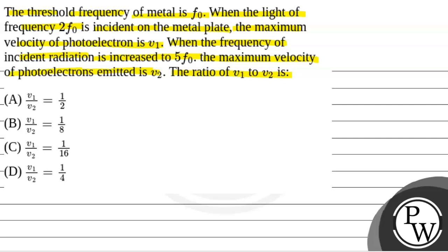So we will solve this question. First of all, we will see what will be the key concept used to solve this question. The key concept that will be used will be hf, where f is the frequency of incident radiation and hf is the energy incident, is equal to hf0, that is the work function of the metal, plus KE max.